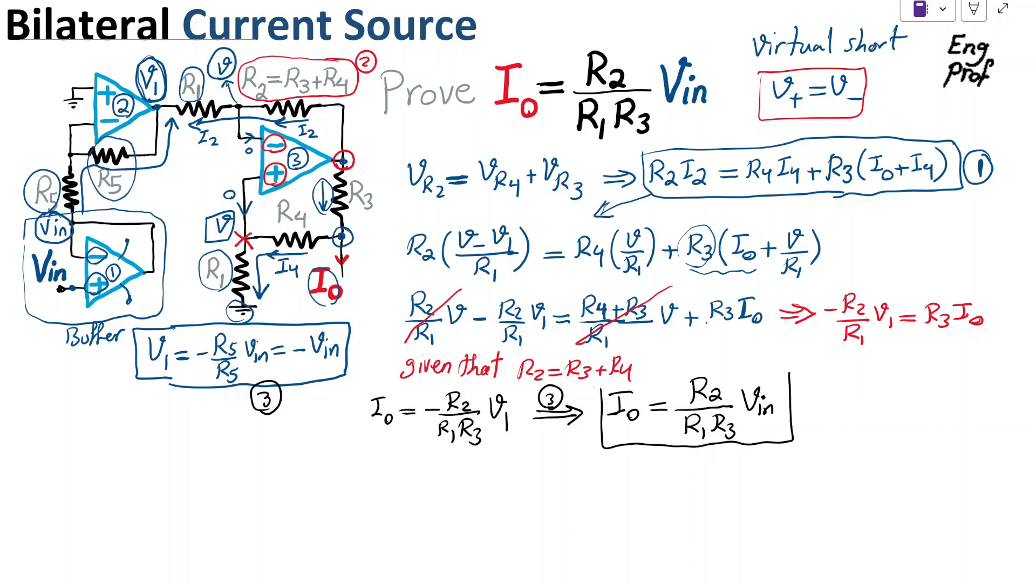So that's the interesting thing. We managed to generate a current I_out that is only a function of the controlled voltage V_in, and then R2 and R1, R3 resistors in this circuit. Then that current can actually, as I said, the current, depending on the voltage V_in, whether it's a positive or negative voltage, the current can be sourced or sunk. So it can receive or transmit the current out.